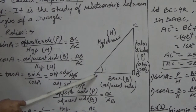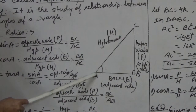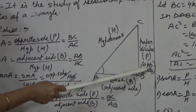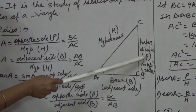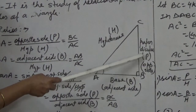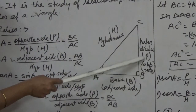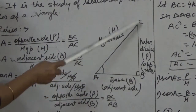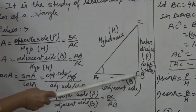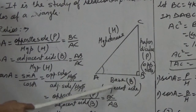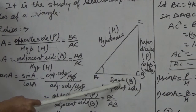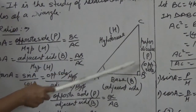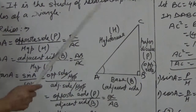With respect to angle A, the opposite side is BC — that is called the opposite side, also called perpendicular. The side adjacent to angle A is AB — AB is called the adjacent side or base.